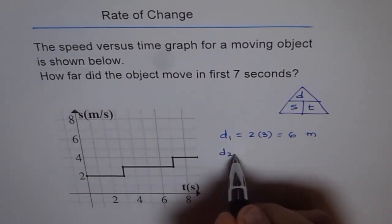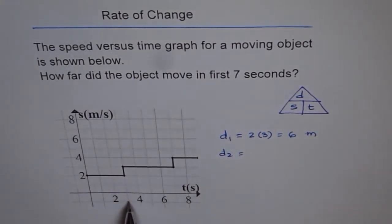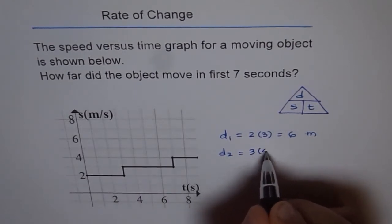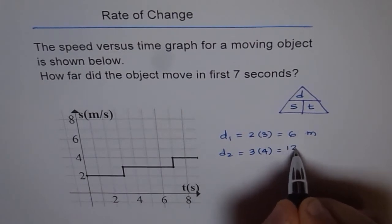Now distance two is from three to seven, which is four seconds. And in four seconds, the speed is three. So three times four will give us twelve meters.